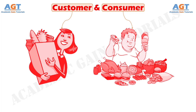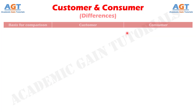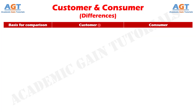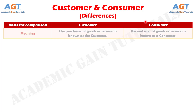So let's look into the basic differences between customer and consumer in a tabular form. Difference number 1: the purchaser of goods or services is known as the customer, whereas the end user of goods or services is known as a consumer.